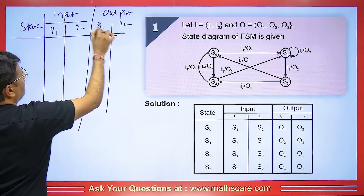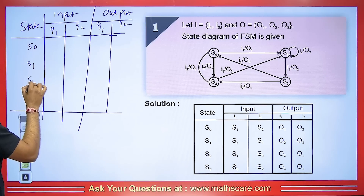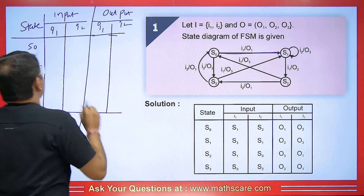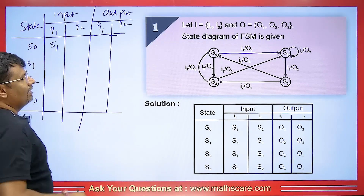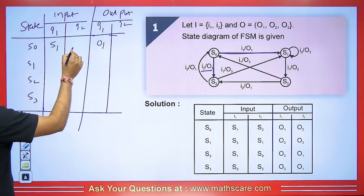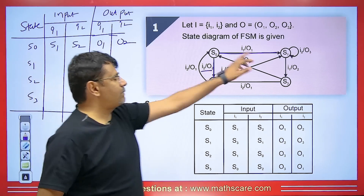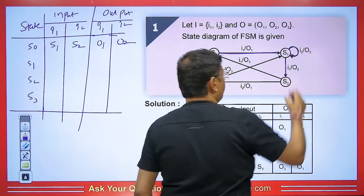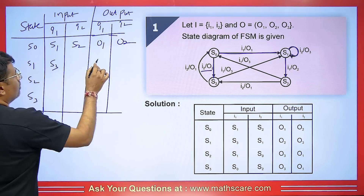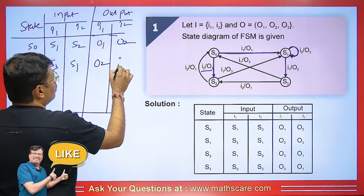The states are S0, S1, S2, and S3. For S0 going to S1: input I1 gives next state S1 and output O1. For S0 going to S2: input I2 gives next state S2 and output O2. For S1 going to S3: input I1 gives output O2. S1 makes a self-loop with input I2 and output O3.